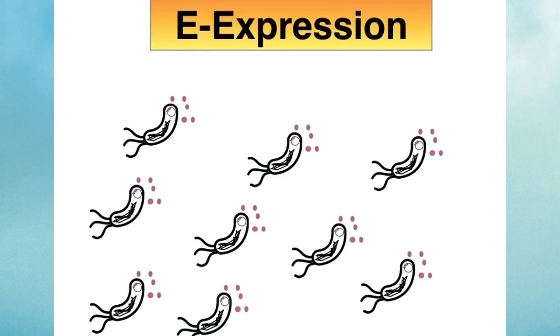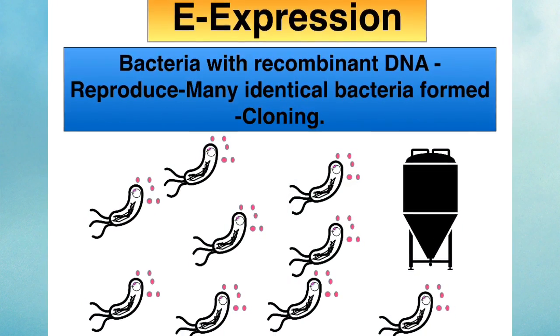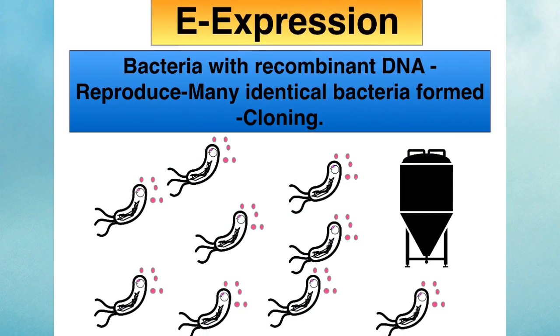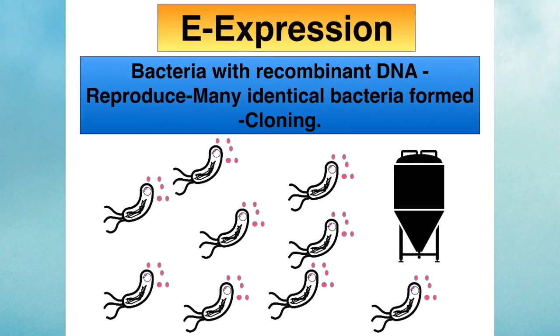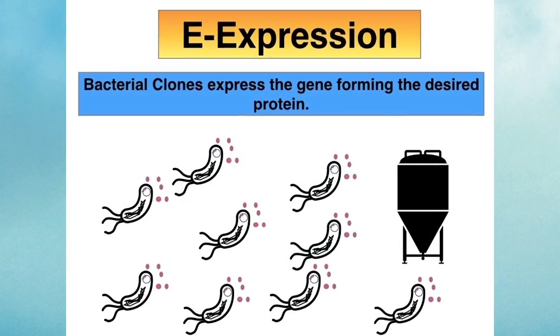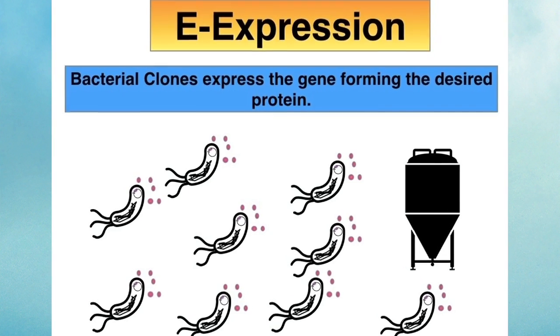The final stage of the process is expression. Those bacteria that were successfully transformed, the introduction of recombinant DNA was successful, will now multiply producing many identical clones. Each of these will express the gene and form the desired product.